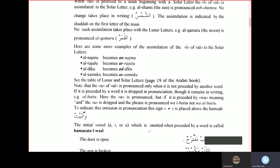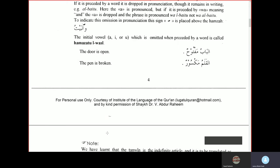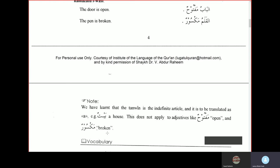The initial vowel alif - alif i, e, or u - which is omitted when preceded by a word, is known as hamza tulvasan. This vowel, when it is omitted when preceded by a word, is called hamza tulvasan. For example, al-babu maftuhun, the door is open. Al-kalamu maksurun, the pen is broken.